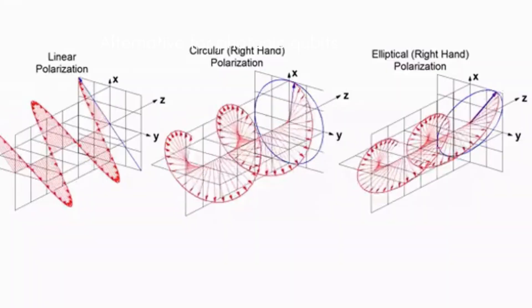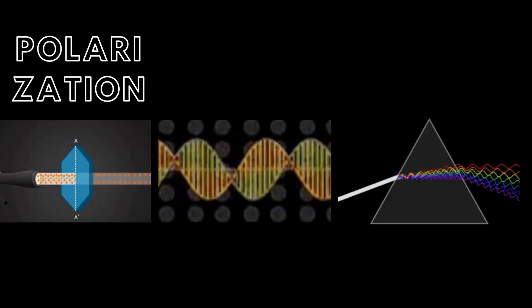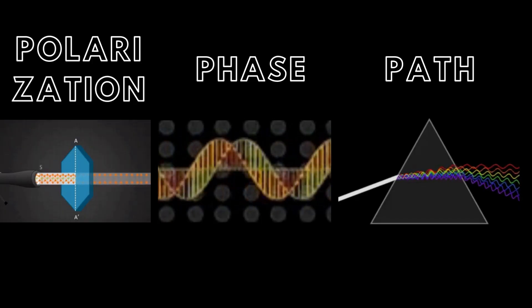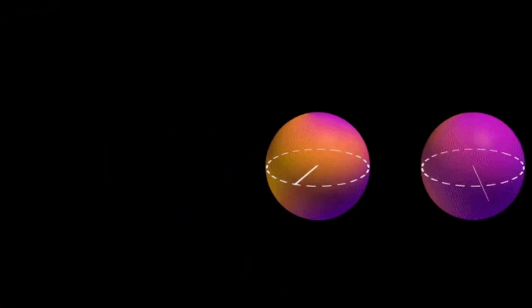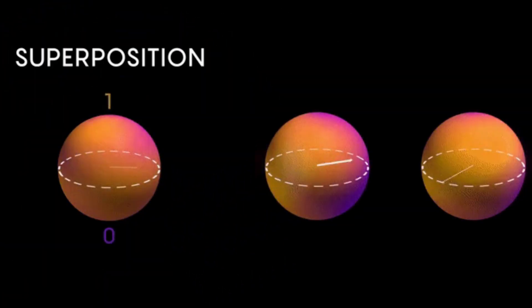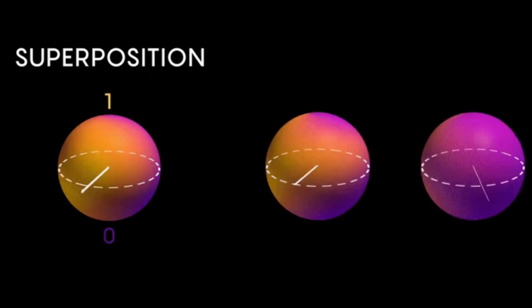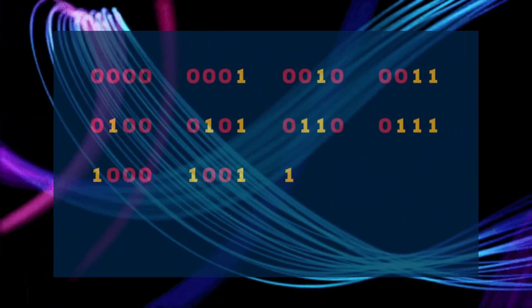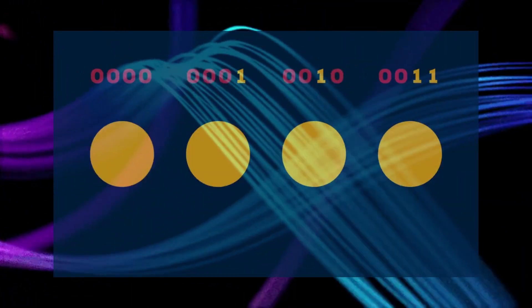Photonic qubits can be encoded in various properties of photons such as polarization, phase, or path. The superposition and entanglement of these properties allow for the encoding, manipulation, and transmission of quantum information. Polarization and path are commonly used properties of photons to encode quantum information.